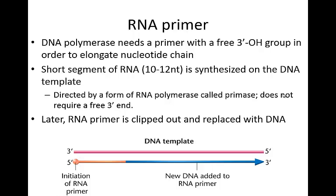Regarding the RNA primer: DNA polymerase needs a primer with a free 3' hydroxyl group in order to elongate the nucleotide chain. Remember, we're always going from the 5' to the 3' direction. A short segment of RNA — maybe 10 to 12 nucleotides — is synthesized first on this DNA template. This RNA primer is directed by a form of RNA polymerase called primase, which is unique in that it does not require a free 3' end like DNA polymerase does. Later on, this RNA primer gets clipped out and replaced with DNA, so at the end this will be 100% DNA.